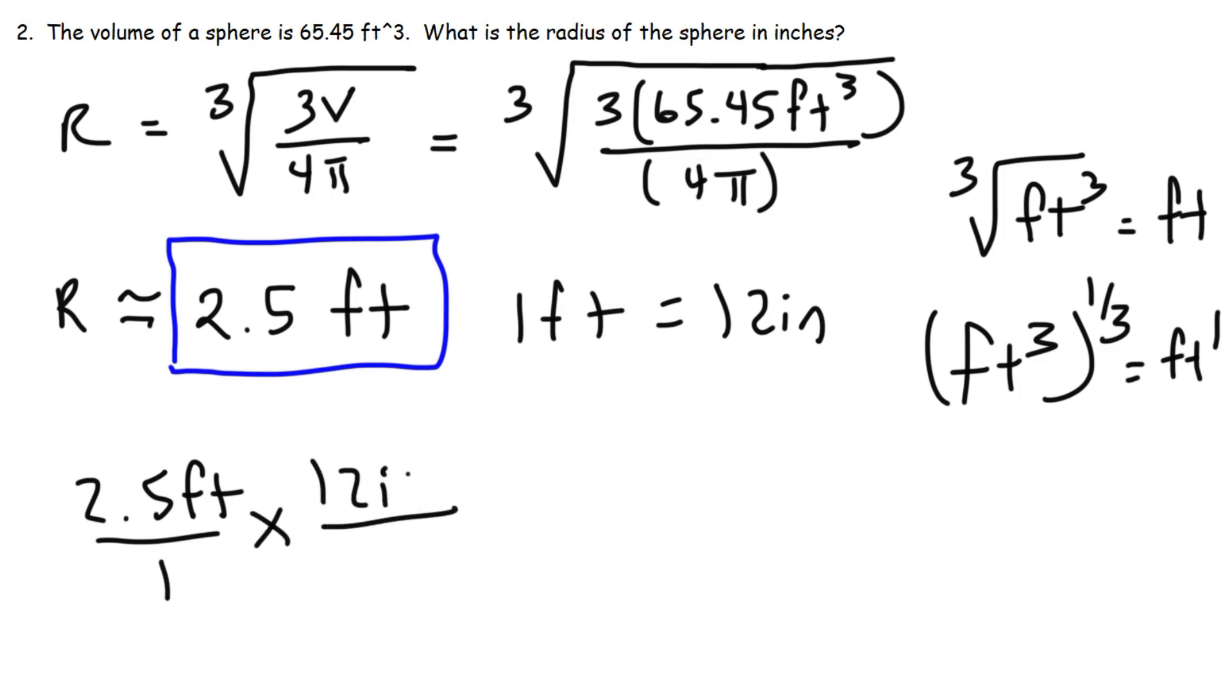So let's start with what we have. And then in the next fraction, we'll write 12 inches per foot. We'll write it in such a way that the unit feet will cancel, leaving us with inches. So it's simply 2.5 times 12. And so the radius is 30 inches.